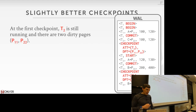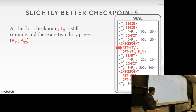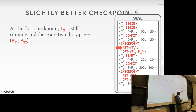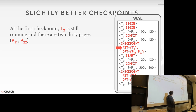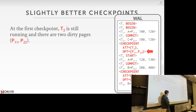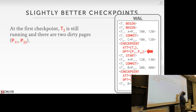Let's see a slightly better version of checkpoints using this information. In our checkpoint entry log record, we're going to have the ATT — at this point we only have one transaction running, T2, so that's the only thing inside. And then we have the dirty page table with P11 and P22. P11 was modified here, and P22 was modified here.